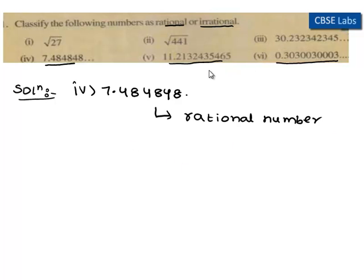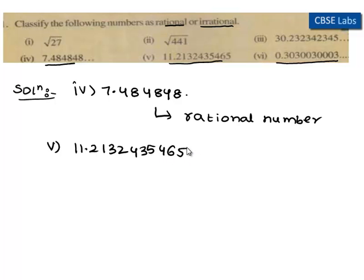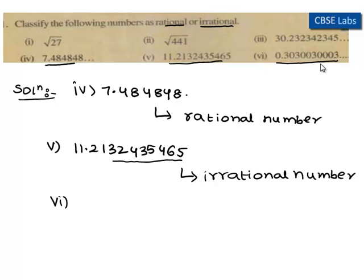Then move on to the next bit. The 5th one is 11.2132435465. As we know, non-recurring decimals are known as irrational numbers. Here, 11.2132435465 is a non-terminating decimal, so we can say that it is an irrational number.